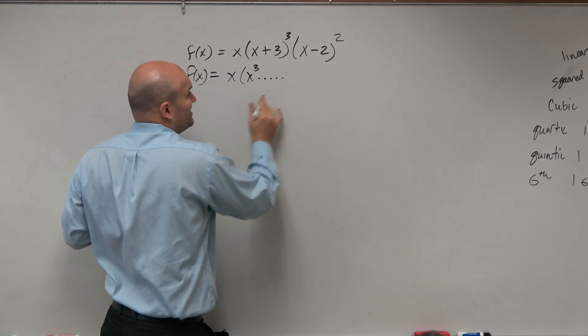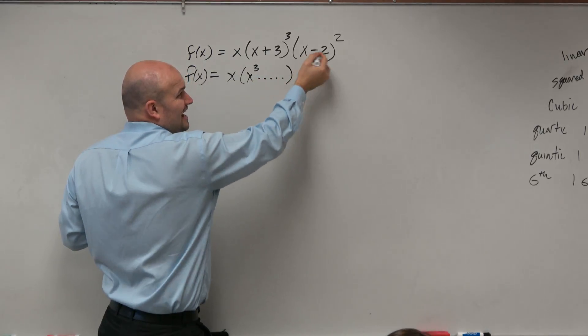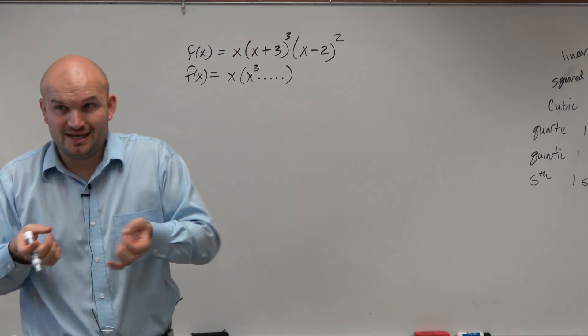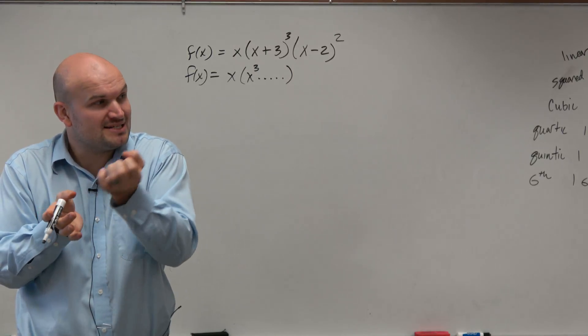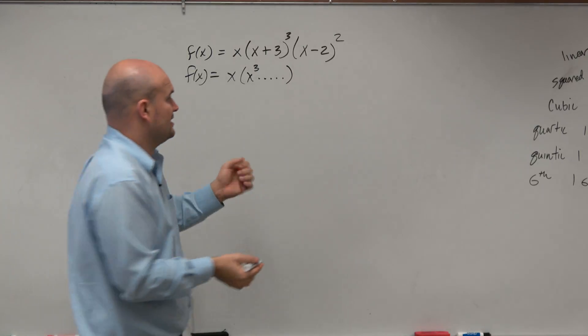I don't know what the rest of it is, but guess what? I really don't need to. So, x minus 2 squared is going to give me the leading term as x raised to the second.